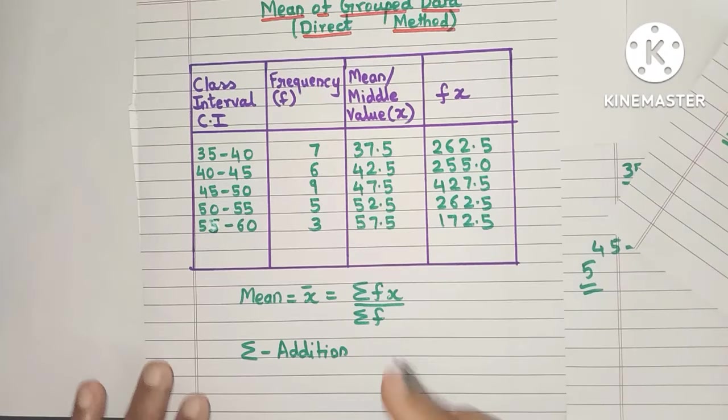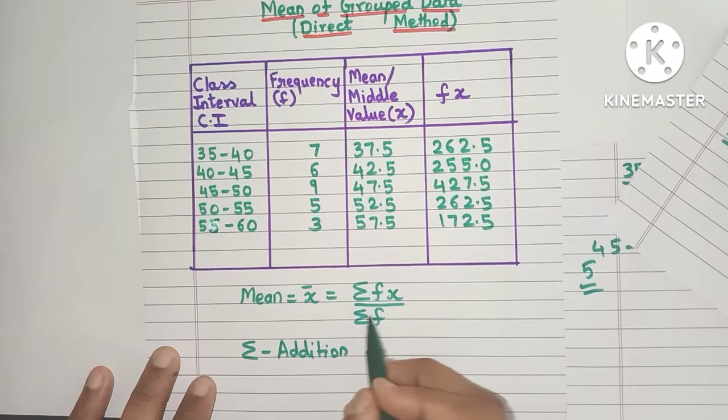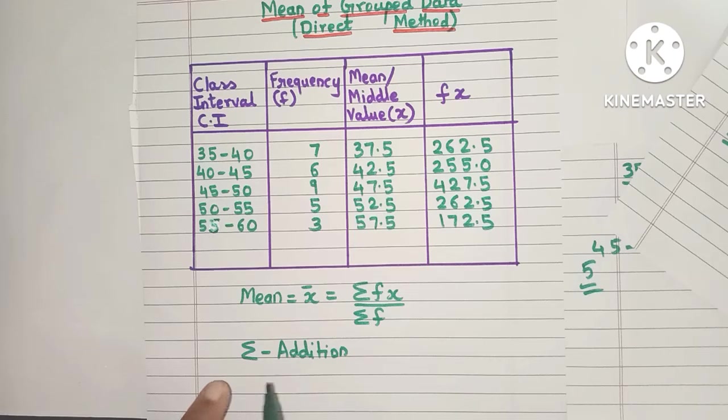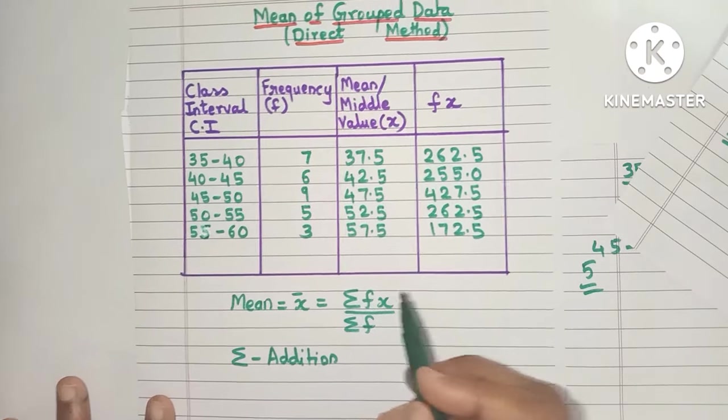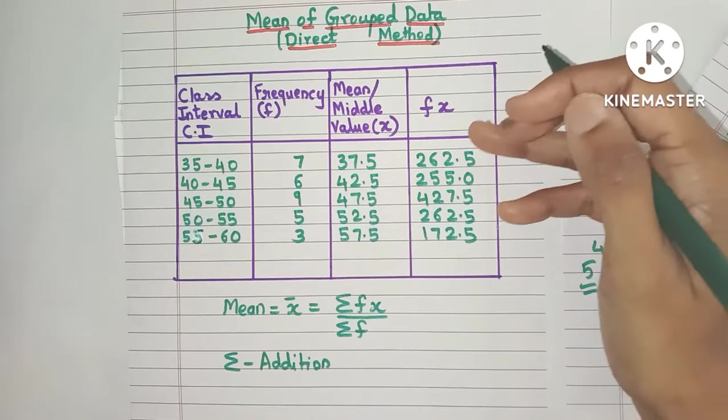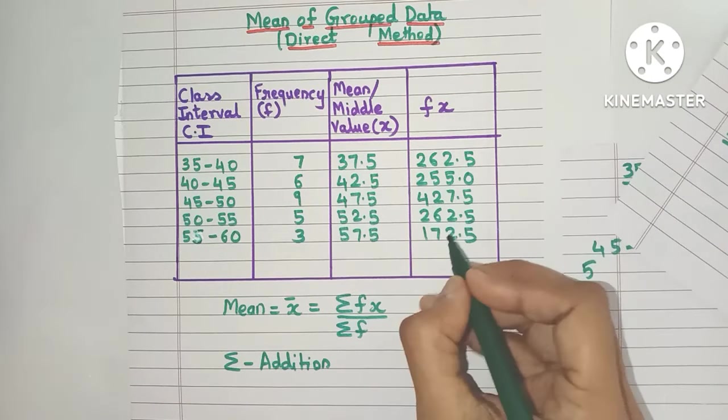Now let's come back to the formula: Σfx divided by Σf. What is this sigma? Sigma is just a Greek symbol which means addition. So Σfx means you are going to add all the fx values. Let's quickly do that.